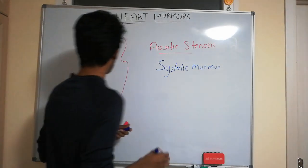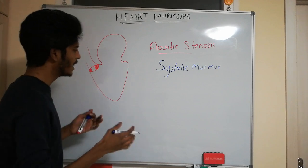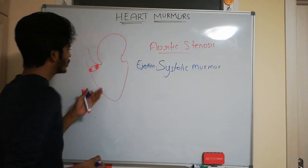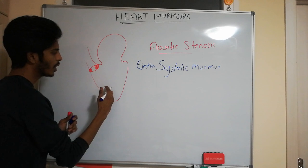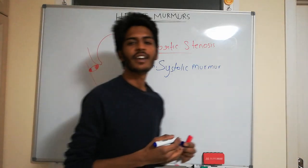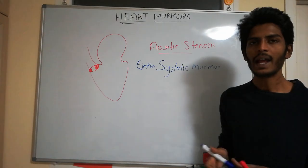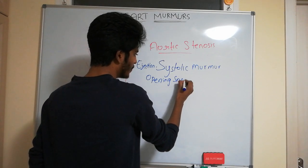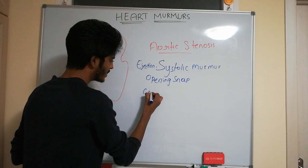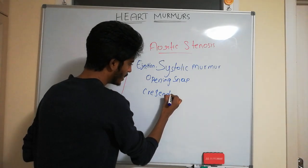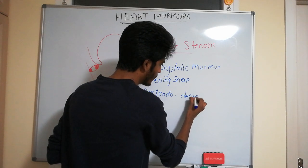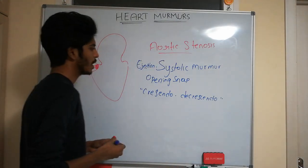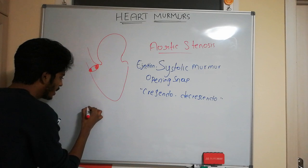More specifically, aortic stenosis produces an ejection systolic murmur, because during ventricular contraction blood is being ejected from the ventricle to the aorta. We can also hear an opening snap. The murmur has a characteristic crescendo-decrescendo pattern — it is a crescendo-decrescendo murmur.